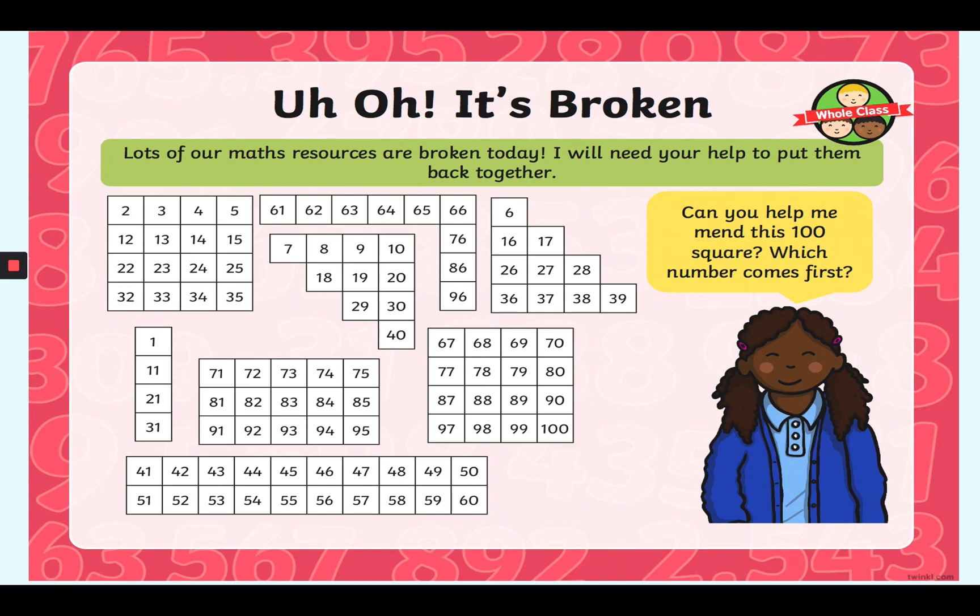Oh no! So the hundred square has broken apart. Your first activity is to get this from the Grange website and you can cut and stick these parts back together to make a hundred square. So if you can see, they're all broken apart. So you have to find all the pieces and put them back together. And you can take a photo of this if you've done it to send it to the Year 1 email address.